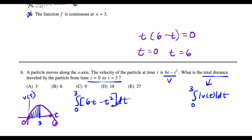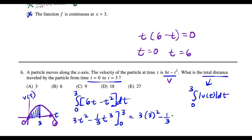Evaluating: the antiderivative is 3t² − (1/3)t³. Plugging in 3 gives 3(9) − (1/3)(27) = 27 − 9 = 18. Plugging in 0 gives 0. Total distance is 18, which is choice D.